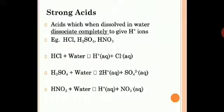According to the definition of acids, a substance which furnishes H+ ions when dissolved in water is called an acid. When you get complete dissociation and a maximum number of H+ ions, that substance is a strong acid. Here we have discussed some examples.